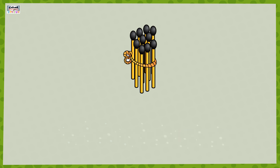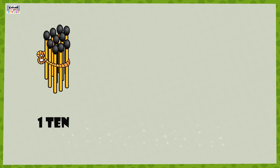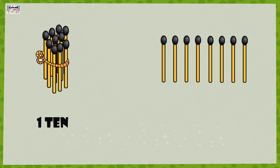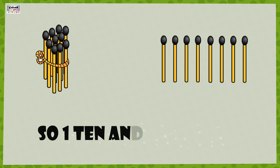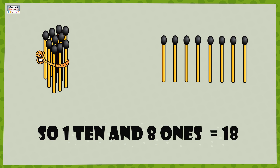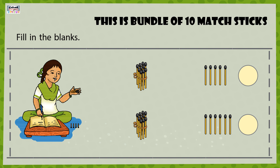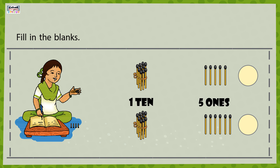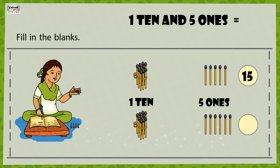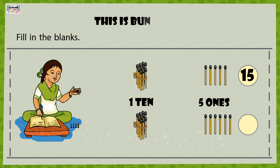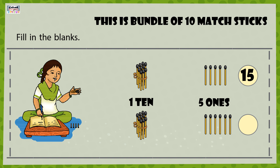This is a bundle of 10 matchsticks, so this is 1 ten and these are 8 ones, so 1 ten and 8 ones is equal to 18. This is a bundle of 10 matchsticks, so this is 1 ten and these are 5 ones.